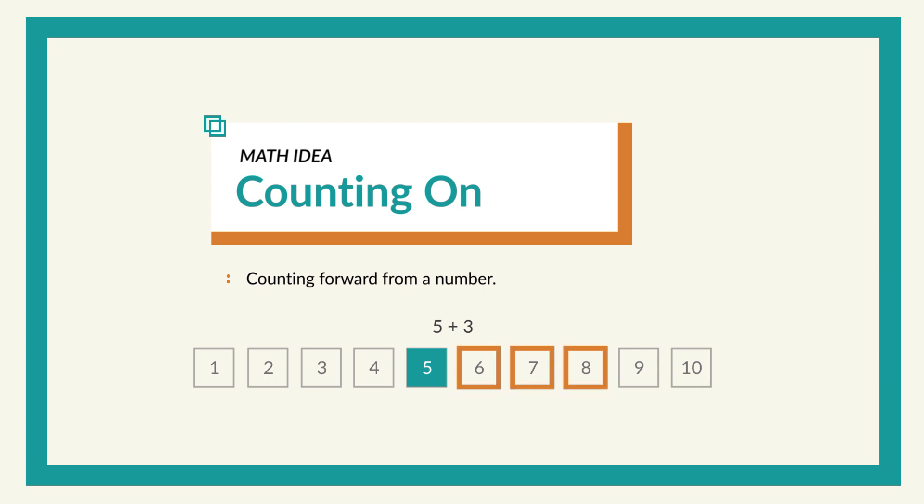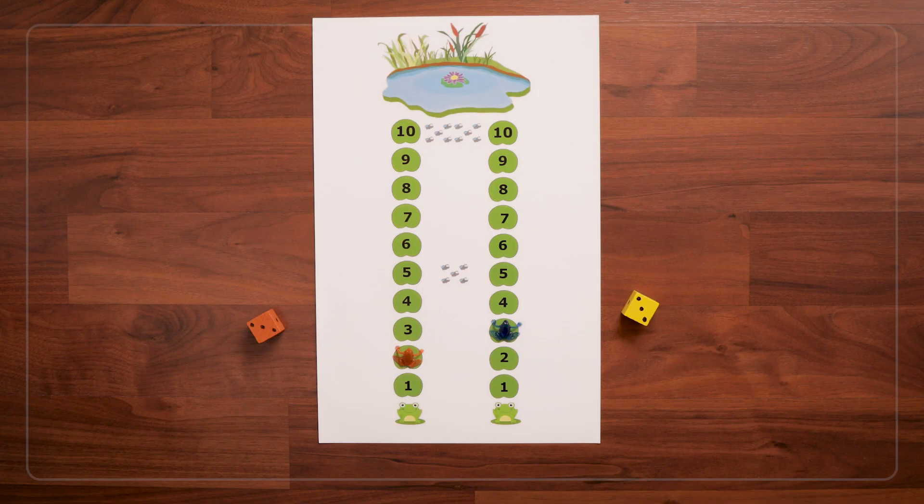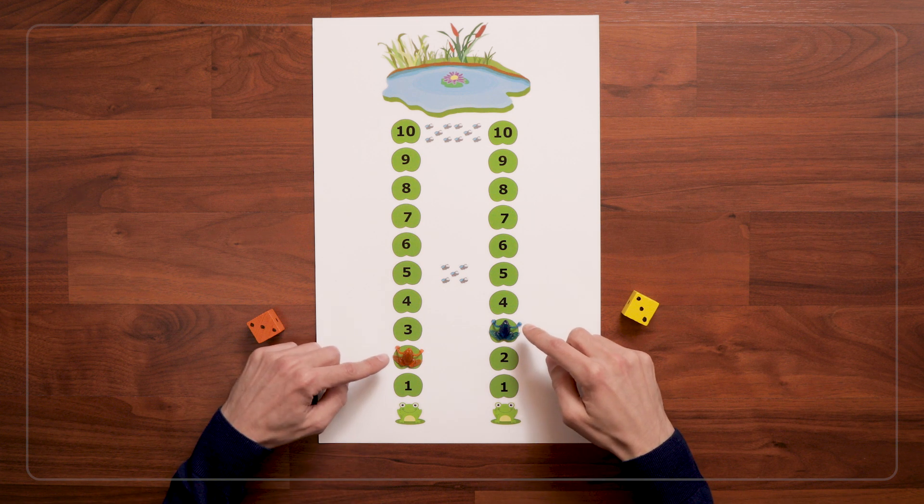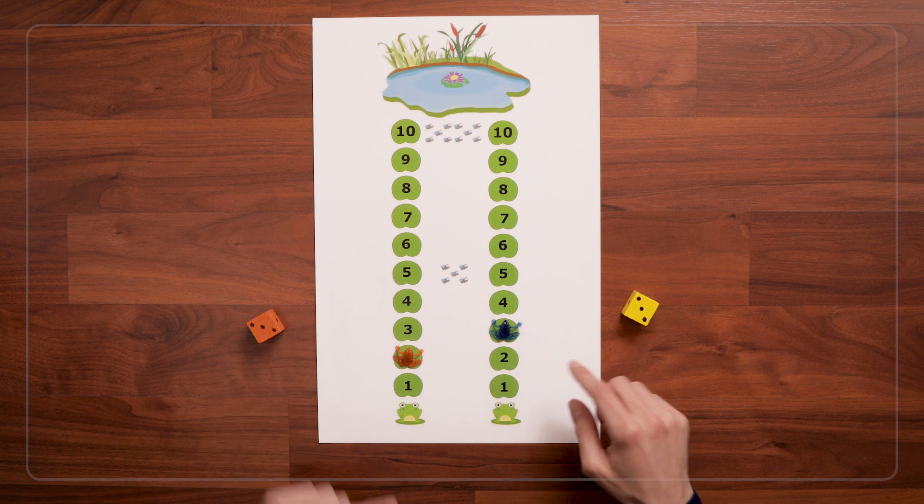Counting on is a skill that kids will use a lot in first and second grade because it's a skill that they use in addition. So say my frog is on 3. And my partner's frog is on 2. And I roll a 3.